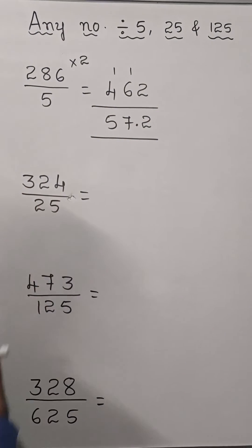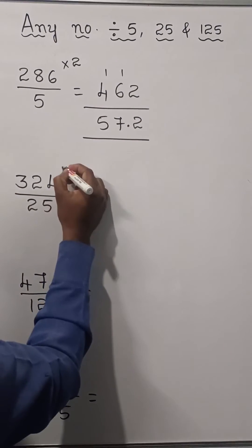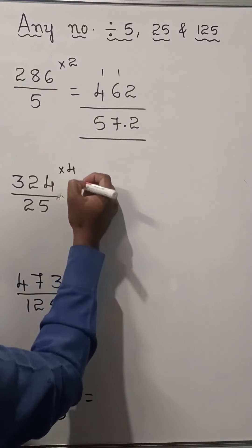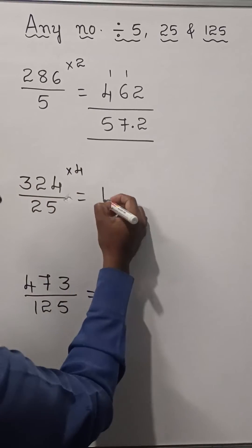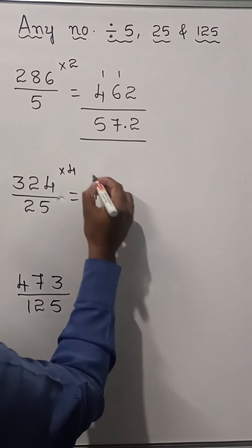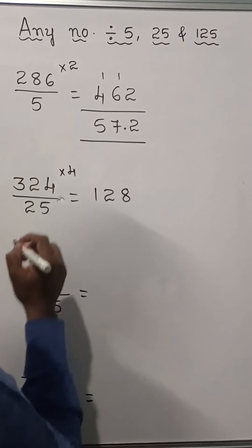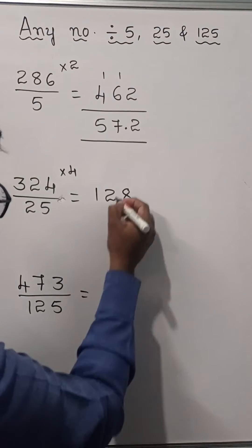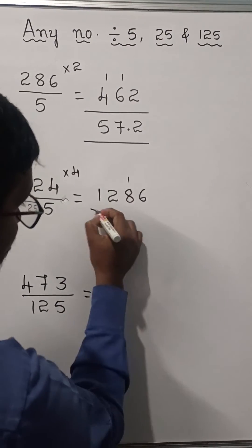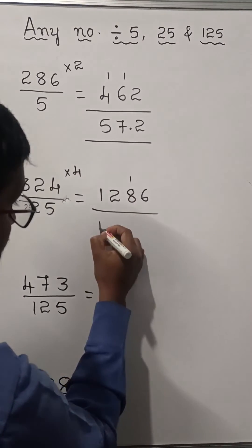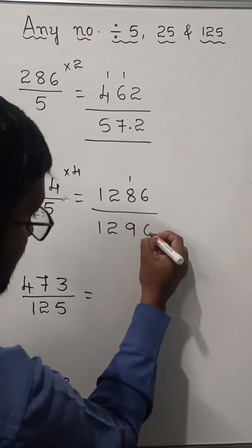324 divided by 25 means multiply the number by 4. 4 times 3 is 12. 4 times 2 is 8. 4 times 4 is 16 — write 6, carry 1. Now the answer for this is 1296.